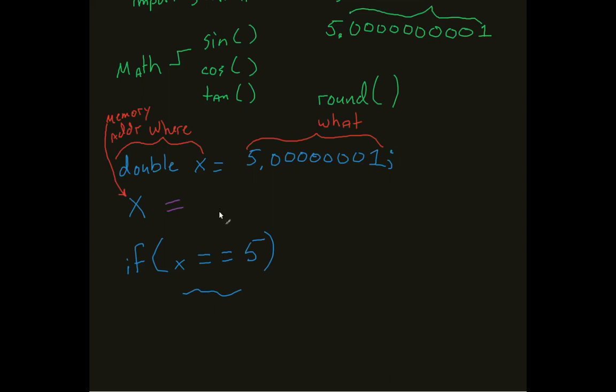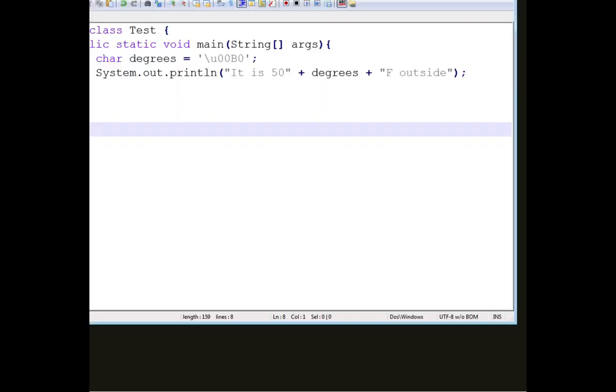So what I can do is I can say something like Math dot round, that round method that we just talked about, parentheses x. And so what this is going to do is, as you can guess, it's going to take our number, round it down to the traditional 5, and now we can actually apply that. So let's even see that in action.